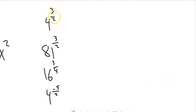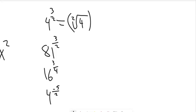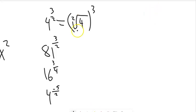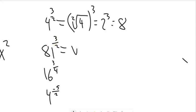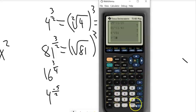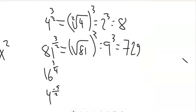Now let's evaluate some expressions. 4 to the 3/2: we square root 4 to get 2, then cube it — 2 cubed is 8. For 81 to the 3/2: square root of 81 is 9, then 9 cubed — I'll use a calculator — that's 729. For 16 to the 3/4: fourth root of 16 is 2, and 2 cubed is 8.